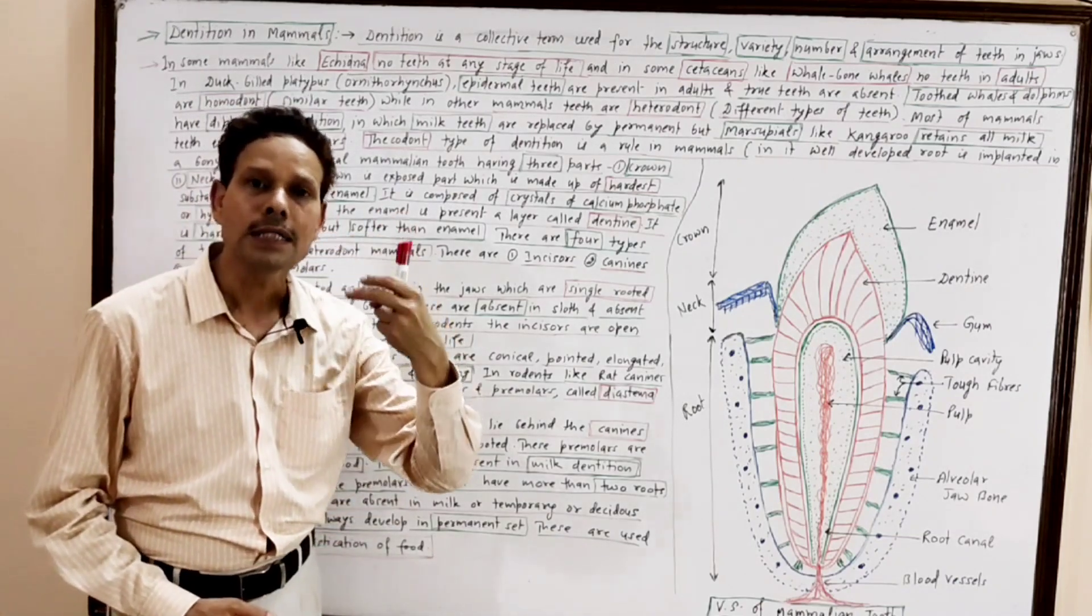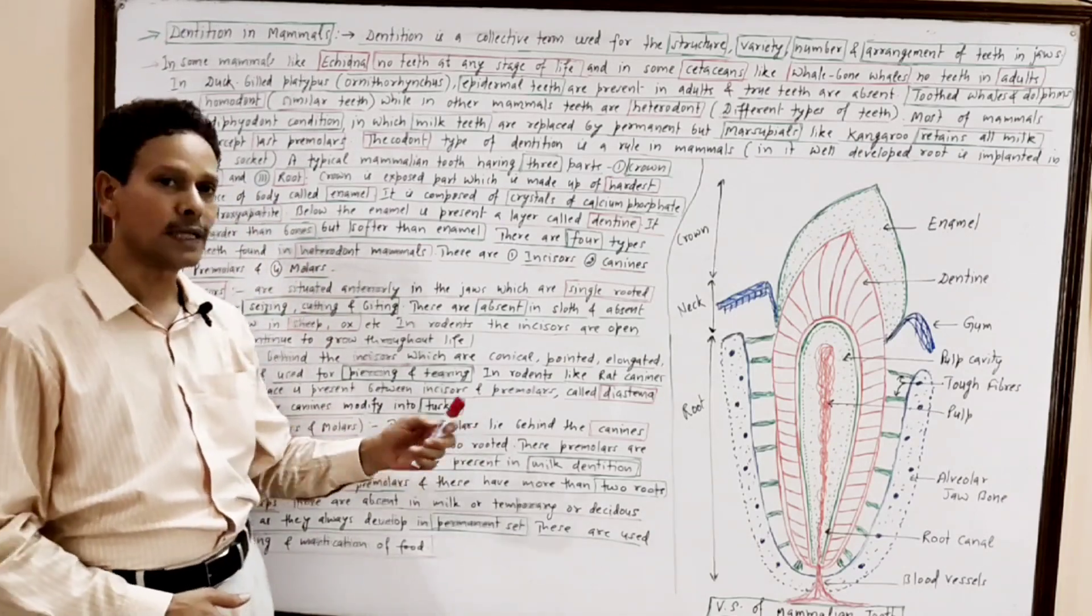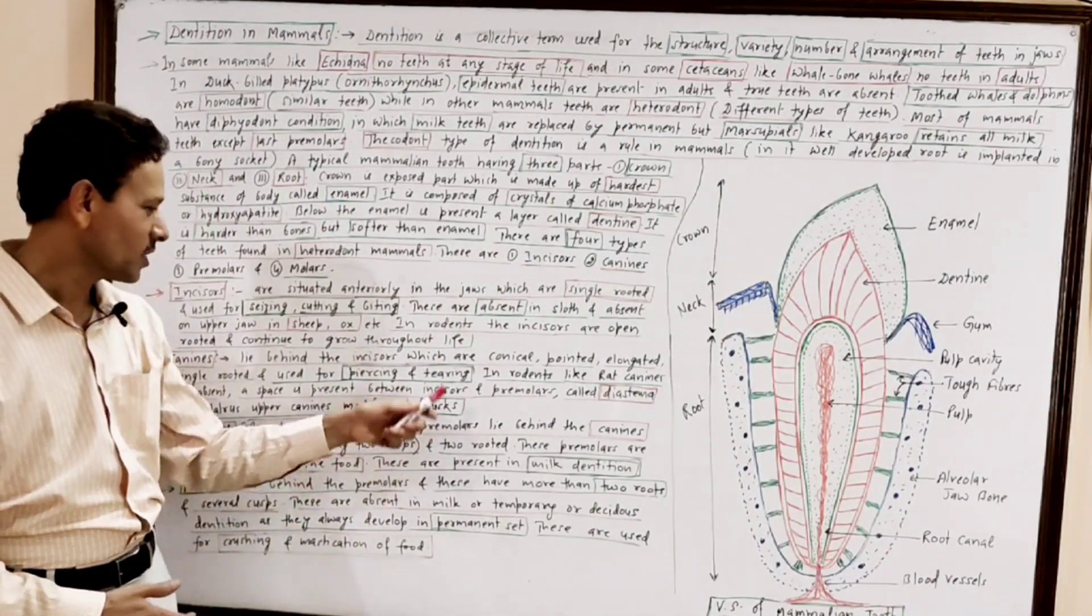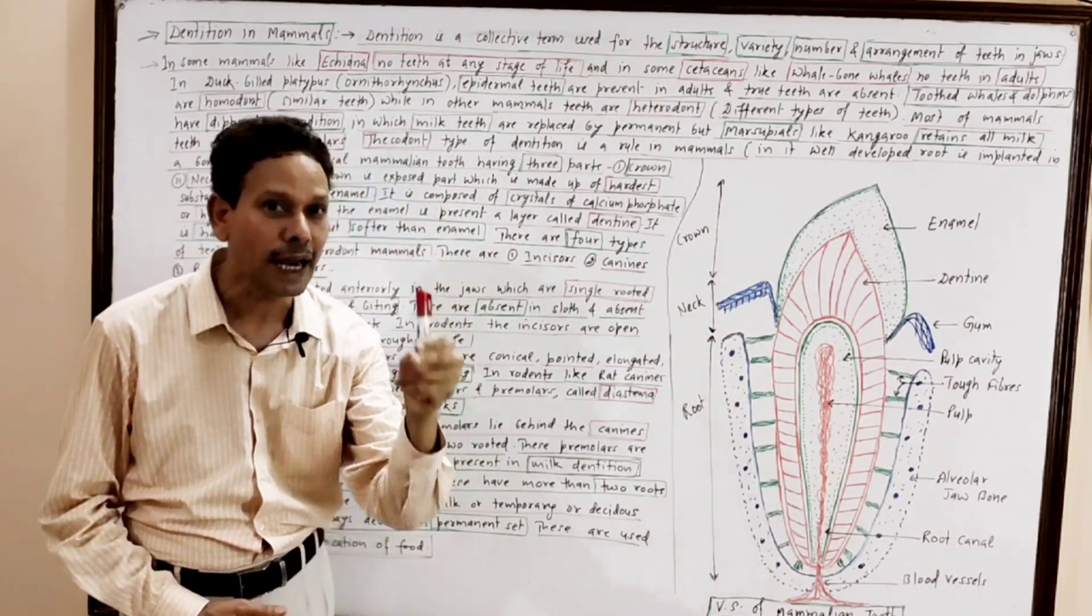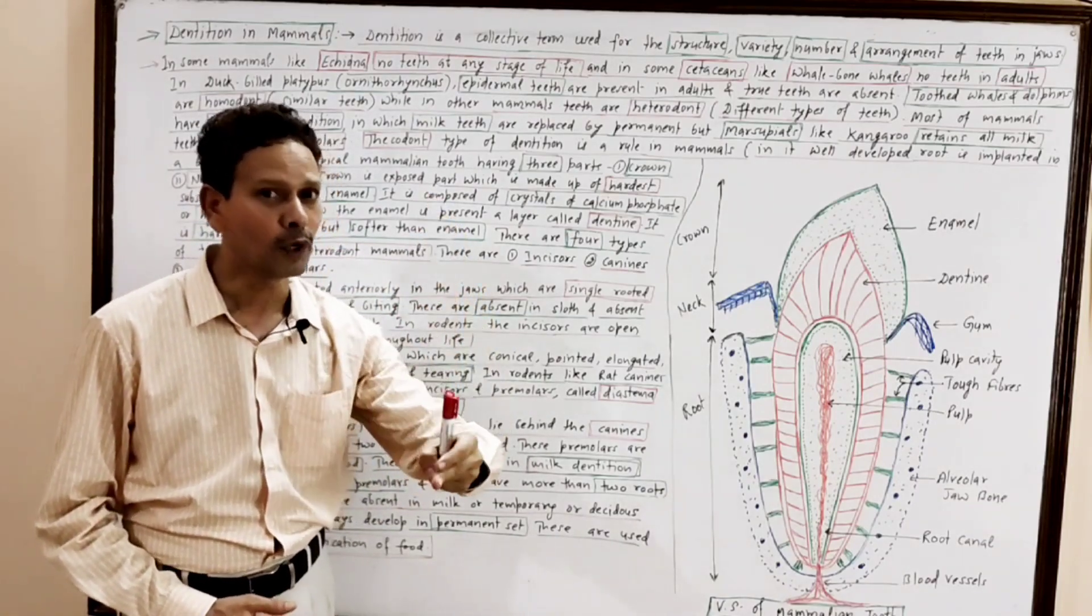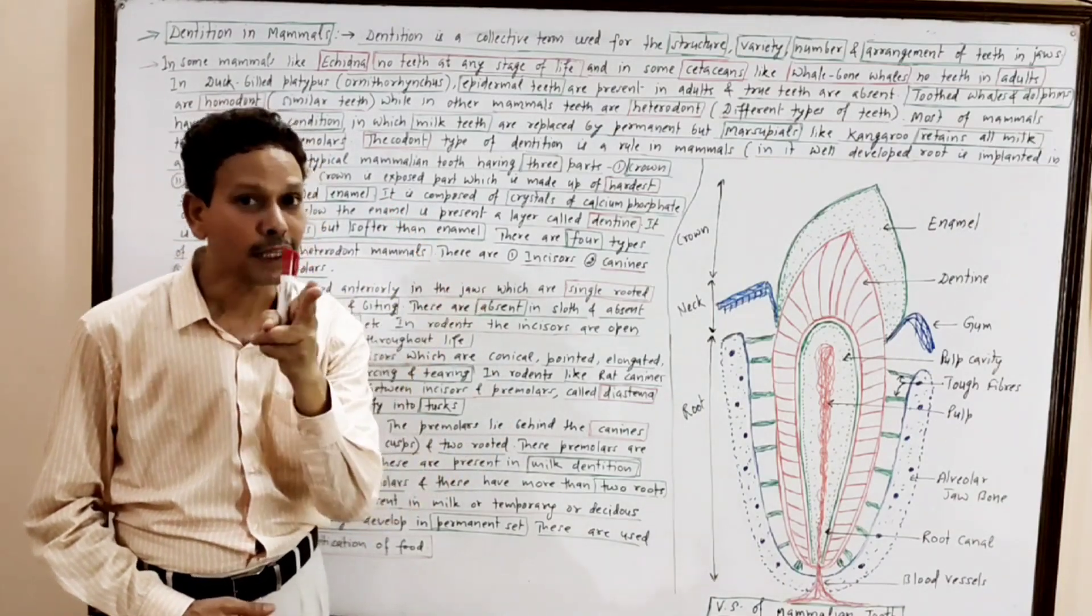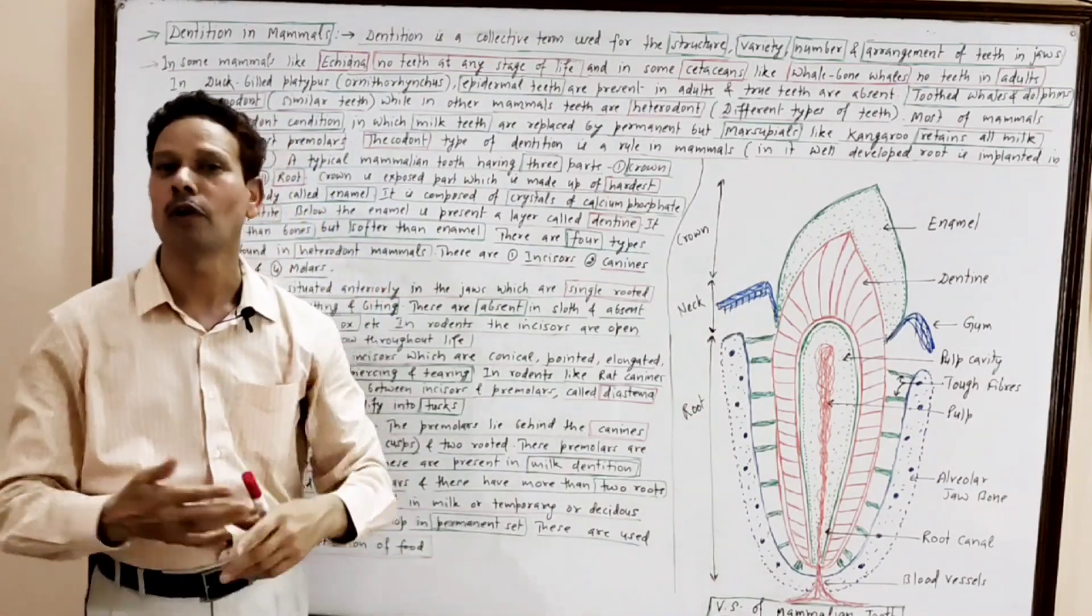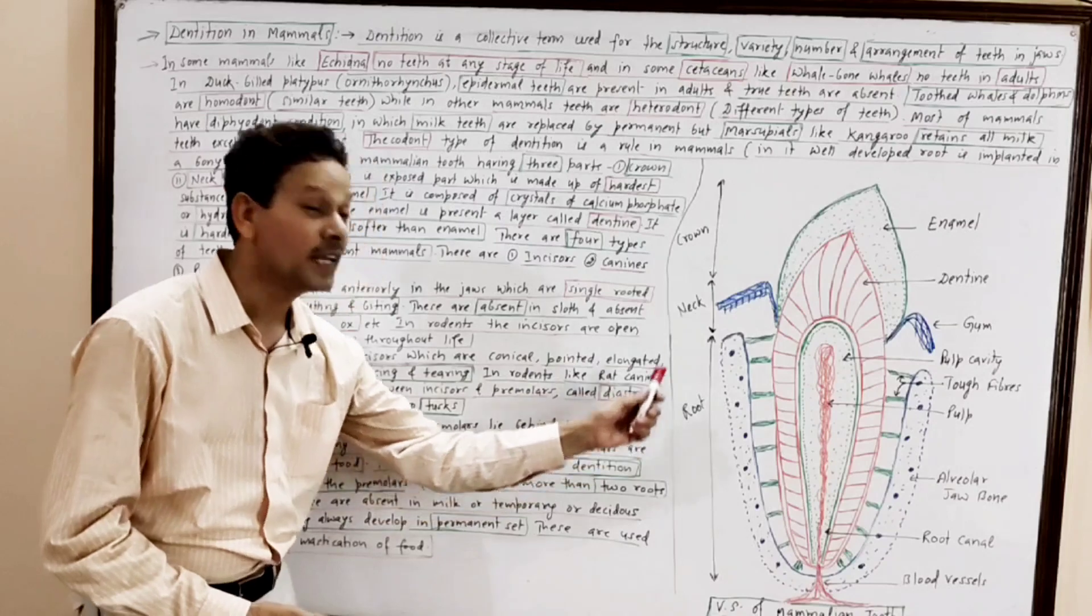The cheek teeth, premolars and molars, collectively constitute cheek teeth. The premolars lie behind the canine. The canines, which are absent in rodents, like rat and rabbit. In rodents, in herbivores like rabbit, canines are absent. So there is a gap space present between incisors and premolars. And that gap space is very important for competitive exam, that is diastema.